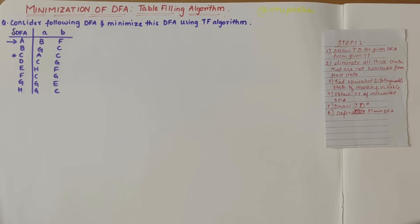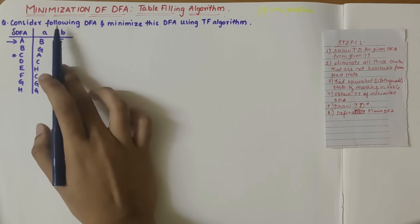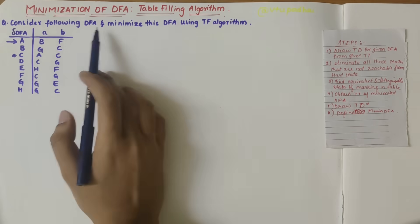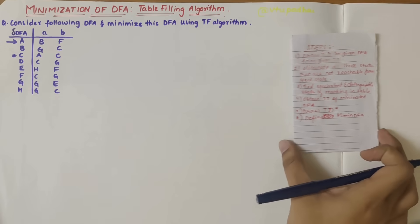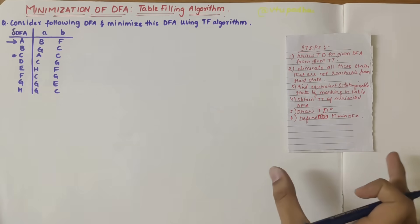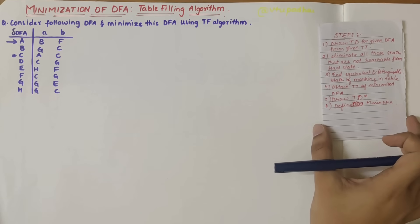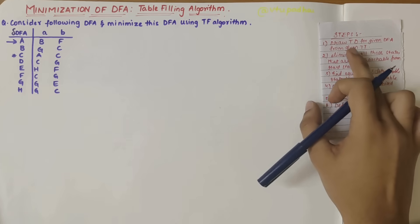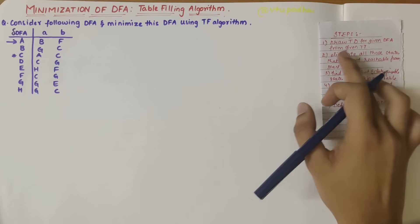In this video we'll be looking into the minimization of DFA by using the table filling algorithm. The question says to consider the following DFA and minimize it. Here are the steps which need to be followed for minimization of DFA. The first step is to draw the transition diagram for the given DFA from the given transition table.